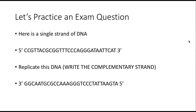Let's practice a typical exam question. I might give you a single strand of DNA with 5-prime and 3-prime ends and ask you to replicate it — which just means write the complementary strand. Since it was given 5-prime to 3-prime, your answer must be 3-prime to 5-prime, because DNA is an antiparallel molecule. It's DNA, so we use A's and T's instead of U's — G pairs with C, A pairs with T. The answer would be C, C, G, G, G, C, T, T, A, A, A, T, and so on.